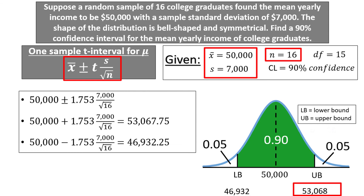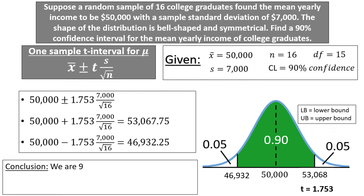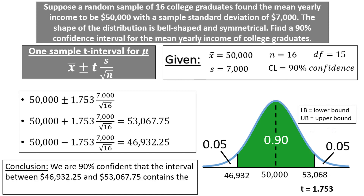Our conclusion is that we are 90% confident that the interval between $46,932.25 and $53,067.75 contains the population mean income for college graduates. Alright my friends, we have finished our discussion of one-sample t-intervals for the mean. We will be exploring many more fun and exciting statistical topics, so make sure to check out our other videos.